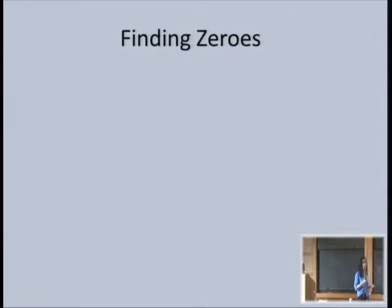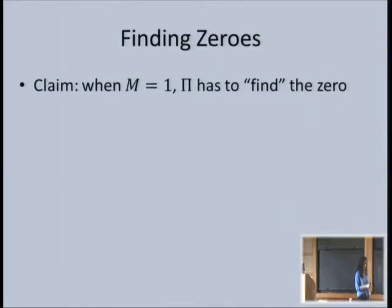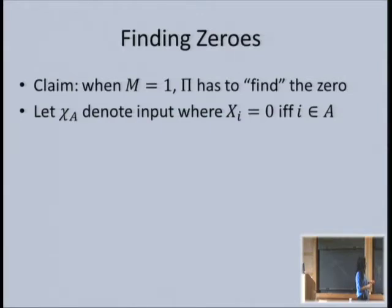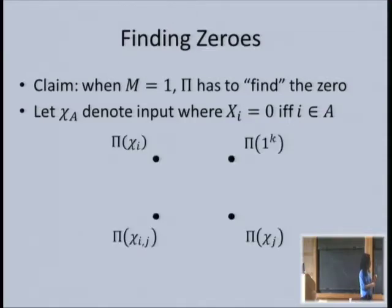We're going to first show that the protocol really has to find which players have zero—although this is not part of the AND problem, since you just need to find if there is a zero. Using notation where χ_A denotes the input where players in set A get zero and everyone else gets one: look at the rectangle with players i and j where only i gets zero, nobody gets zero, and both i and j get zero. This is a combinatorial rectangle. By worst-case correctness, the distance between the distributions where the answer is 1 and where it's 0 must be large. Applying the cut-and-paste lemma, the protocol must tell whether player i had the zero or player j had the zero.